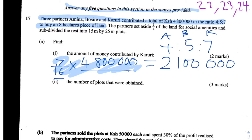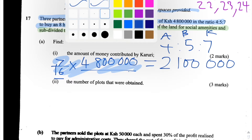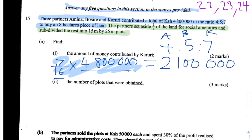The next question asks for the number of plots that were obtained. We're told that the partners set aside a quarter of the land for social amenities and subdivided the rest into 15 by 25 metre plots. So if a quarter was set aside for amenities, that means three quarters was left to be divided into the 15 by 25 metre plots.